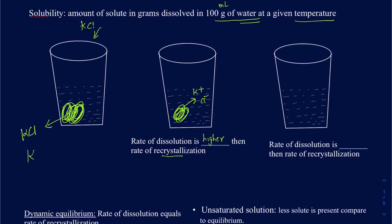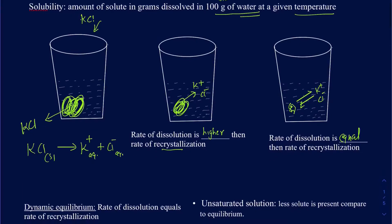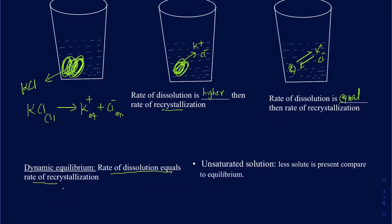The overall reaction is: KCl solid dissolves into K⁺ (aq) plus Cl⁻ (aq). As time goes by and more KCl dissolves, at some point the rate of dissolution equals the rate of recrystallization — also called the rate of solidification — where no more KCl can dissolve. We can write this as a dynamic equilibrium where a little solid remains and the ions go back and forth.